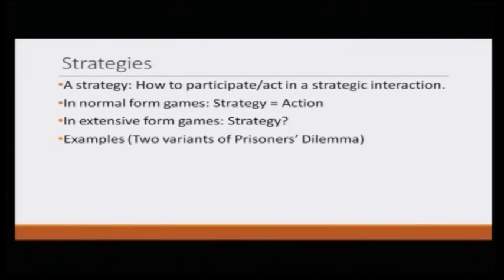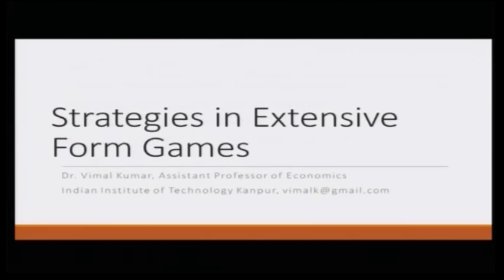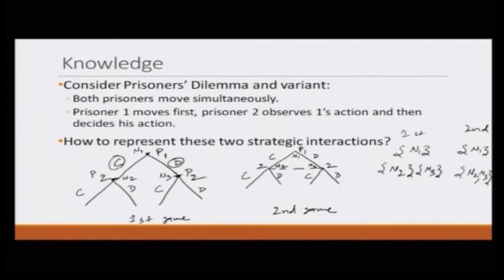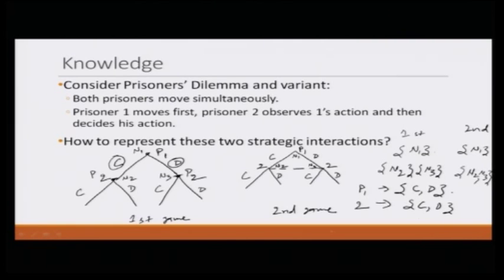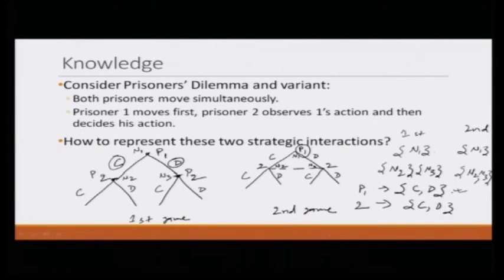For example, let us go back to the prisoner's dilemma — we have been discussing this from the previous module. In this game, it is clear that player one has two strategies, C and D. Whether we call it strategy or action does not matter in the simultaneous move game. Prisoner two again has two strategies. Notice we can arbitrarily say that prisoner one moves first and then prisoner two moves, or vice versa, but since prisoner one is not aware of the actual move, both players will have the same set of strategies: C and D.